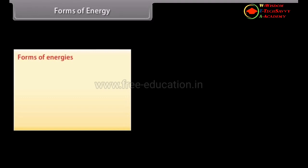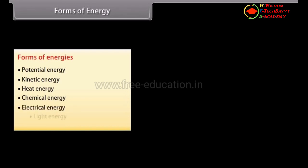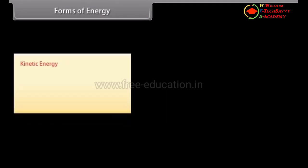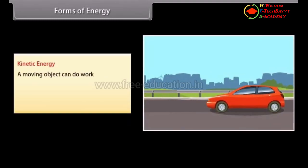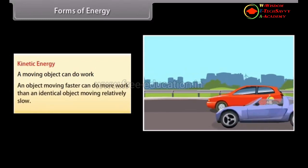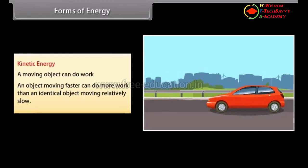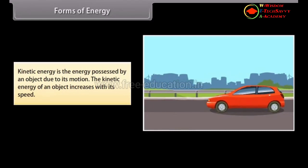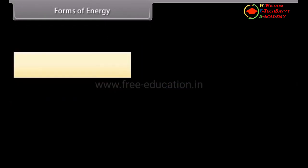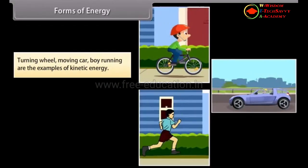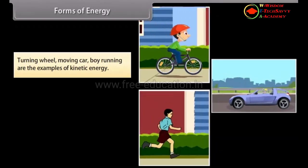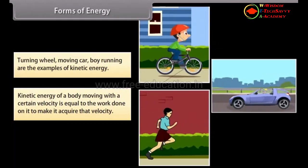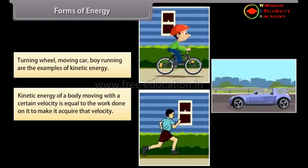Forms of energy. There are many different forms of energy: potential energy, kinetic energy, heat energy, chemical energy, electrical energy, and light energy. A moving object can do work, and an object moving faster can do more work than an identical object moving slowly. Kinetic energy is the energy possessed by an object due to its motion. The kinetic energy of an object increases with its speed. Examples include a turning wheel, a moving car, and a running boy.